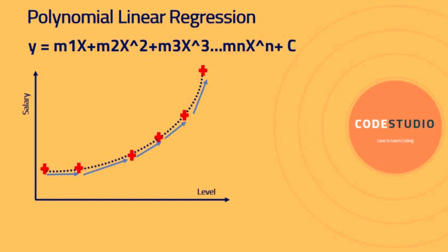In polynomial regression, the algorithm tries to create a parabolic best fit line instead of a straight line, by creating polynomial features based on the given independent features. The equation is: y = m1*x + m2*x² + m3*x³ + ... + mn*xⁿ + c, where m1, m2, etc. are the slopes and x is the independent variable.